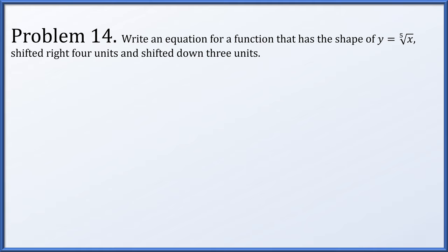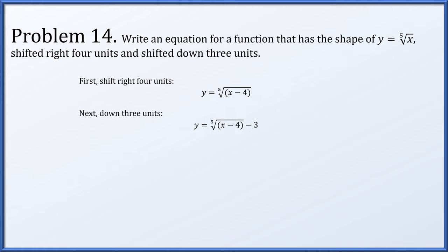In problem 14, write an equation with the same shape as y = fifth root of x, shifted right four units and shifted down three units. To shift right four units, replace x with x minus 4, giving (x − 4) to the 1/5. Then to shift down three units, subtract 3 from the entire expression.